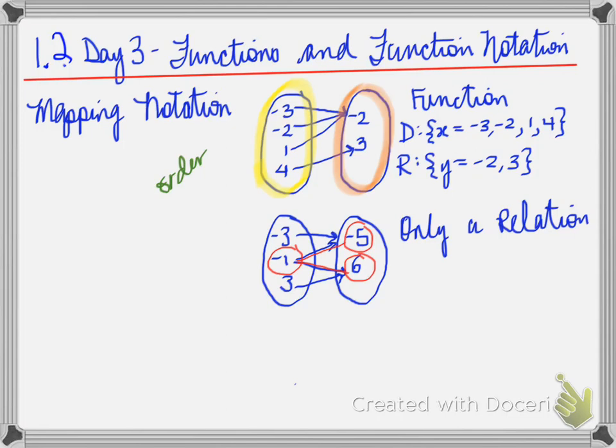So even though negative two is repeated three times, we only write it once when we list the range. And in the second one, you state the domain and you state the range. Now note again, you do not repeat numbers and you definitely write them in order.